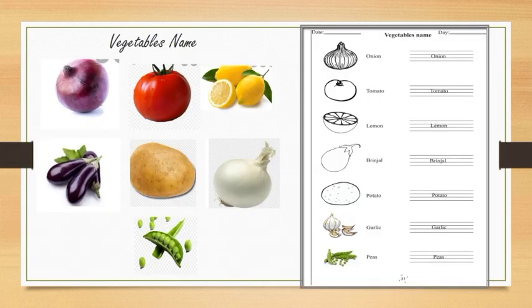Okay, next you have your vegetable names. First, onion, tomato, lemon, brinjal, potato, garlic, peas.